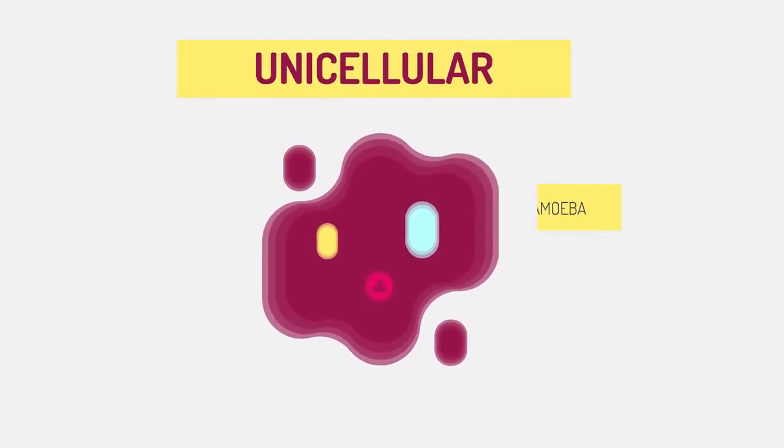Did you know that some organisms exist of just one cell? These simple organisms, like amoeba, are unicellular.